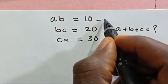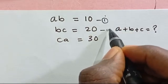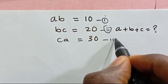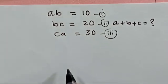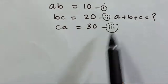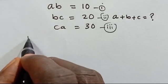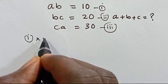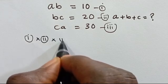So we name these equation 1, equation 2, and equation 3. Then let's multiply them all together — question 1 times question 2 times question 3.